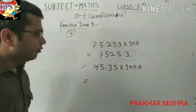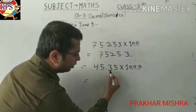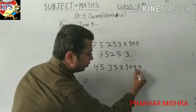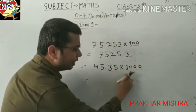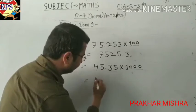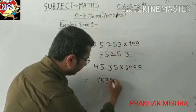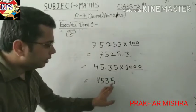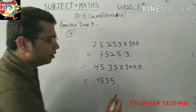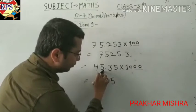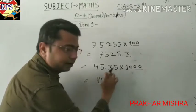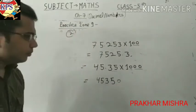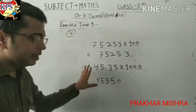Here three zeroes are given. After the point there are only two numbers. So if we shift this point, it only uses two zeroes because two numbers are given after the point. So: 45, 3, 5 — and we mention the point after all these numbers, meaning the point has gone to the end. We have already used these two zeroes to shift the point from here to here. Now one zero is still left, so we mention a zero here — 4535.0.